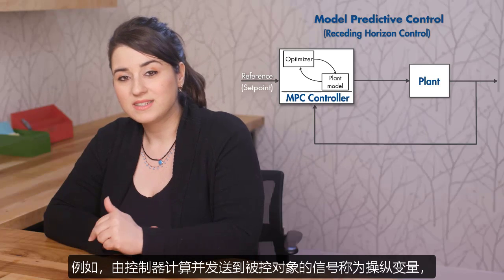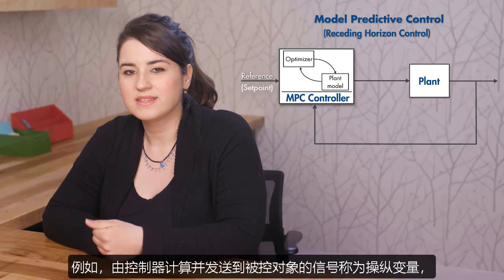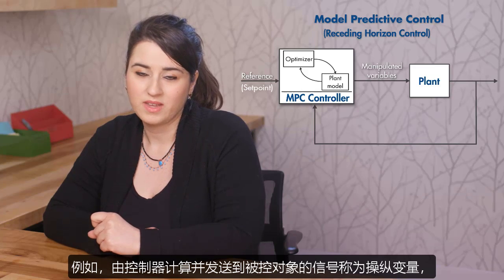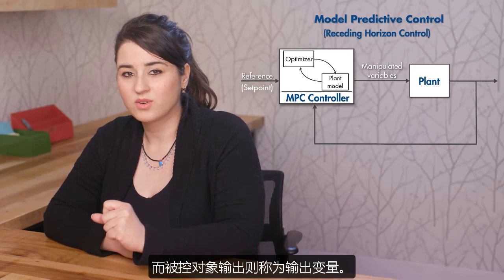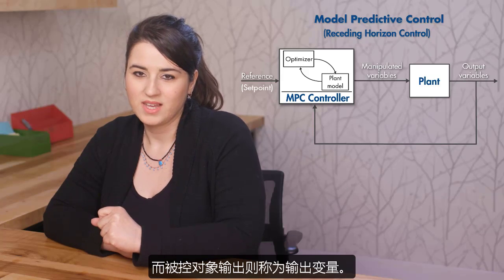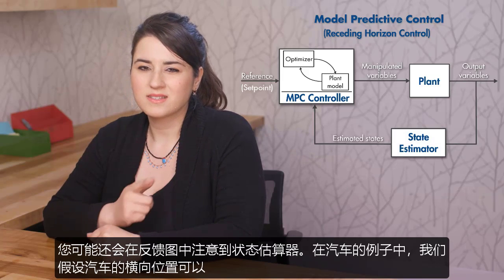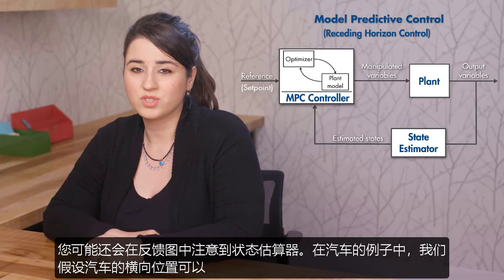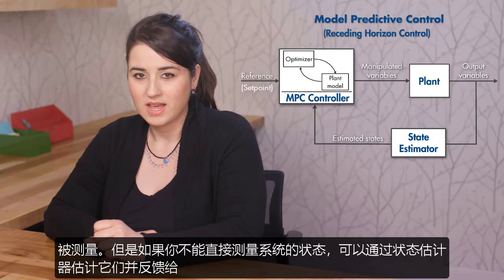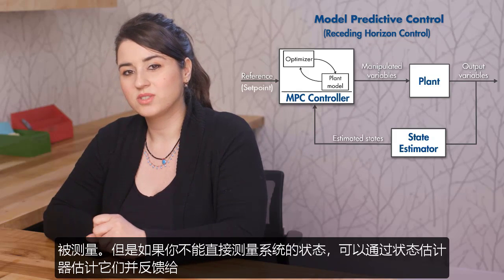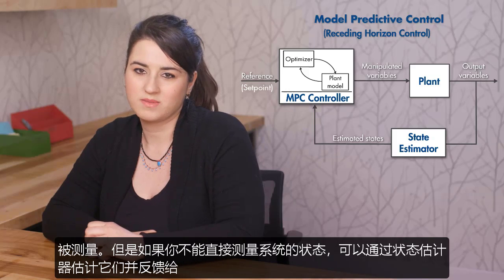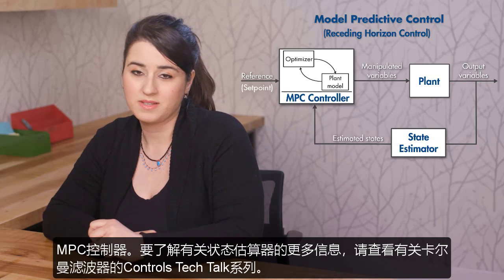For example, the signals computed by the controller and sent to the plant are referred to as manipulated variables, whereas the plant outputs are called output variables. You may also notice a state estimator in the feedback diagram. In the car example, we assumed that the lateral position of the car can be measured. But if you cannot directly measure the states of a system, they can be estimated by a state estimator and fed back to the MPC controller.